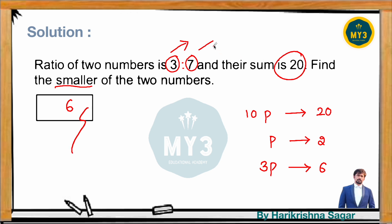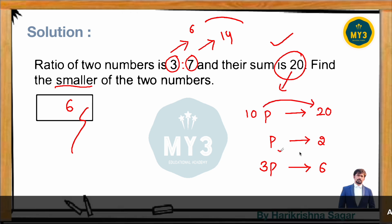The larger number: since one part is 2, the larger number will be 7 × 2 = 14. If you add them up, the sum will be 20, which confirms the answer. So for simple questions like this, you will be given a number — connect that number with the equivalent parts, get the one part value, then find the required value. That is the simple approach in the parts method.